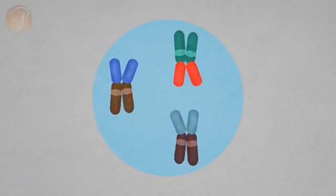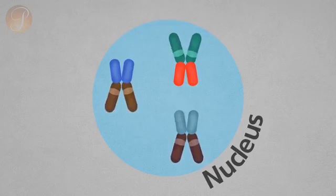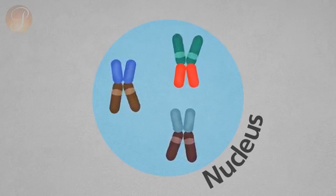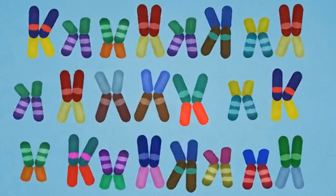DNA folds itself into paired packages called chromosomes, which are stored in a nucleus of cells. Each species has a different number of chromosomes. Humans have 46 chromosomes, which contain our genes.